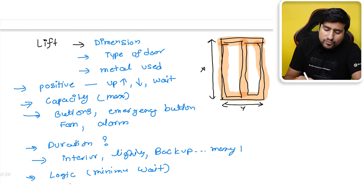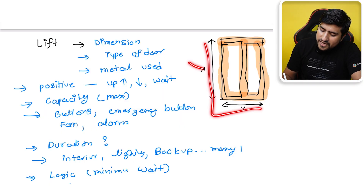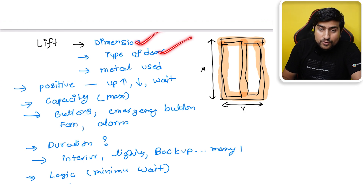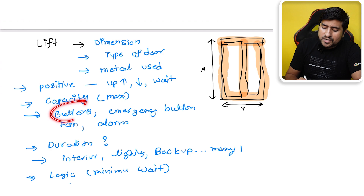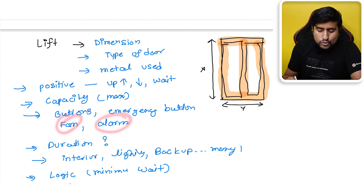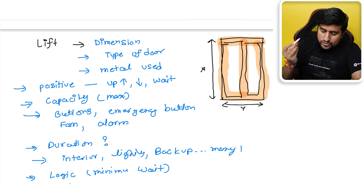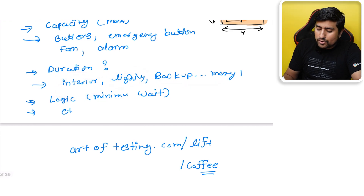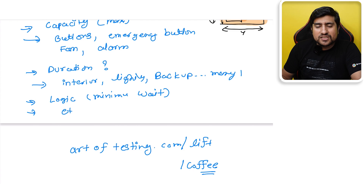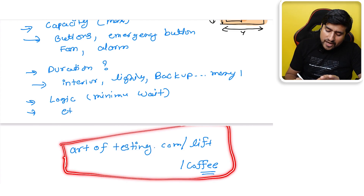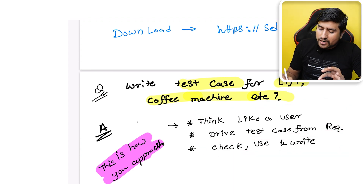For example, for a lift: check the dimension, type of door, metal used. Positive scenarios — is it going up, down, or waiting? What is the maximum capacity? Are the buttons and emergency button working? Is there a fan or alarm? How long does it take to go from floor 1 to floor 40? Is there backup power? What happens on failure? What is the minimum weight logic? You can also check artoftesting.com/lift for more test cases.